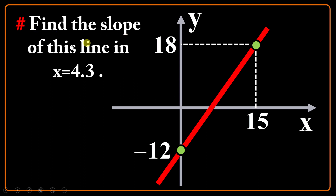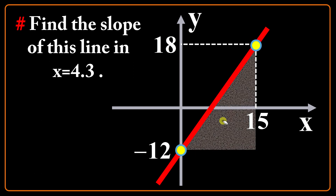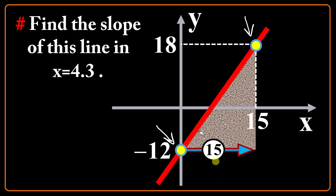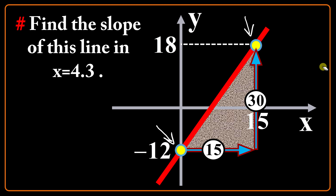Find the slope of this line at x equals 4.3. You know that the slope of the line is not dependent on the point, so everywhere the slope will be the same. Let me establish a right triangle here. I know everything about the vertices now. The horizontal axis indicates the base is 15, and the vertical axis indicates I should go from negative 12 to 18, so the height will be 30. Dividing 30 by 15, I get 2. So the slope of this line is 2 everywhere.